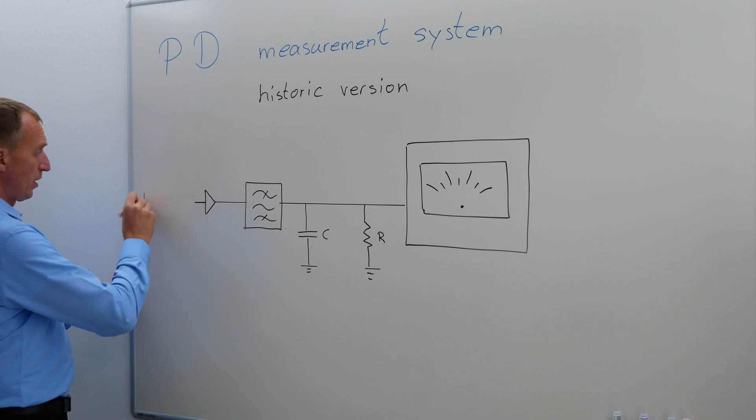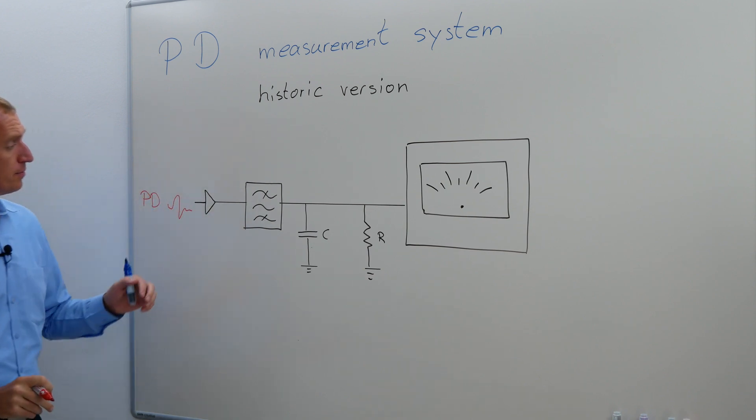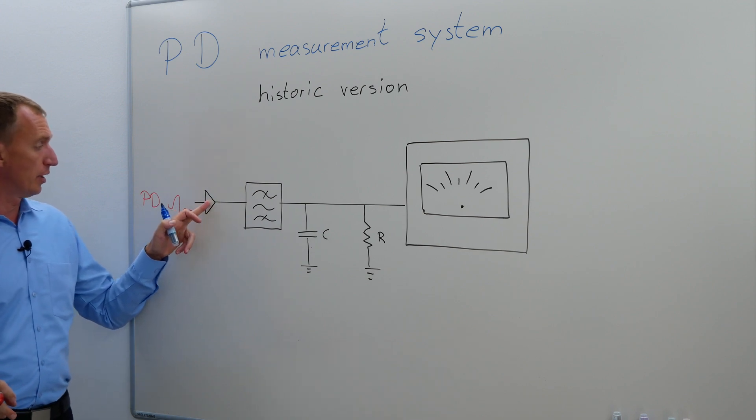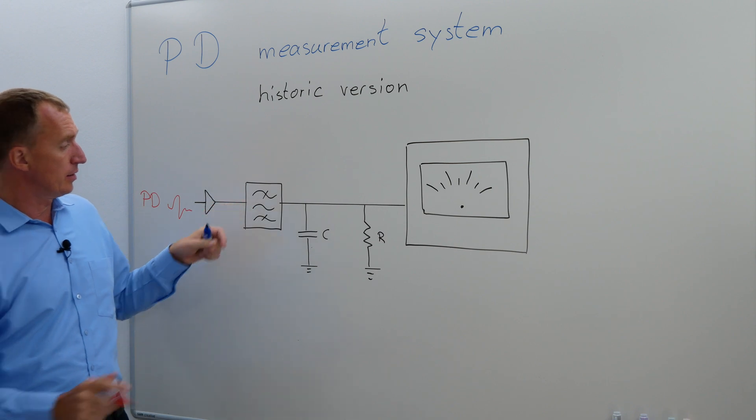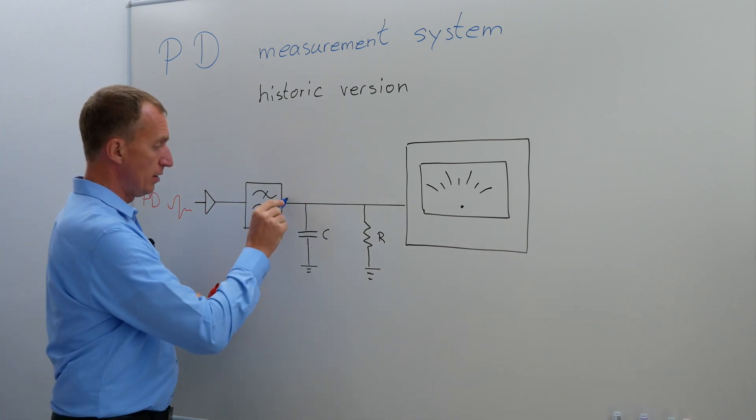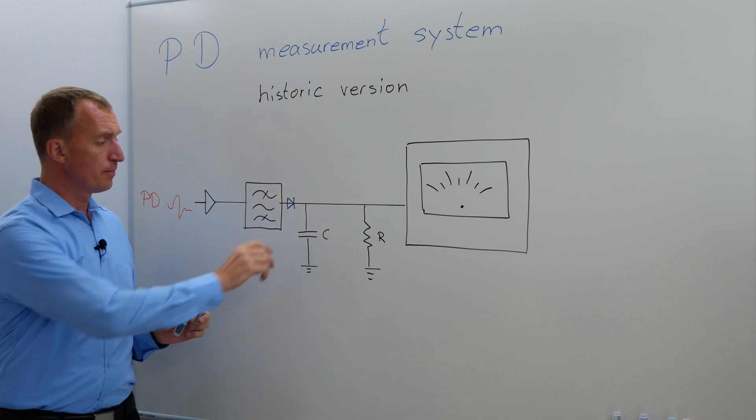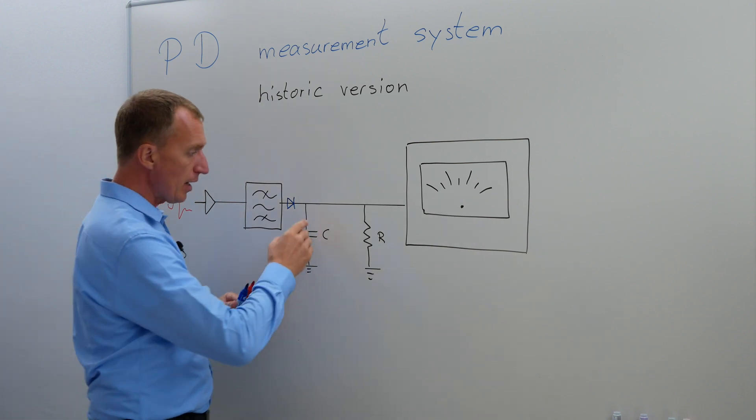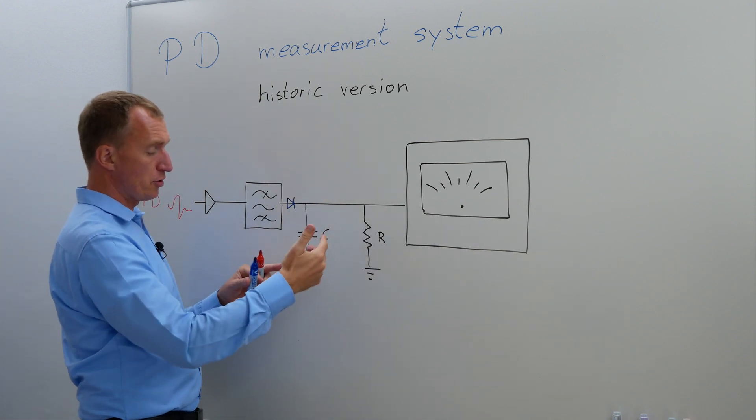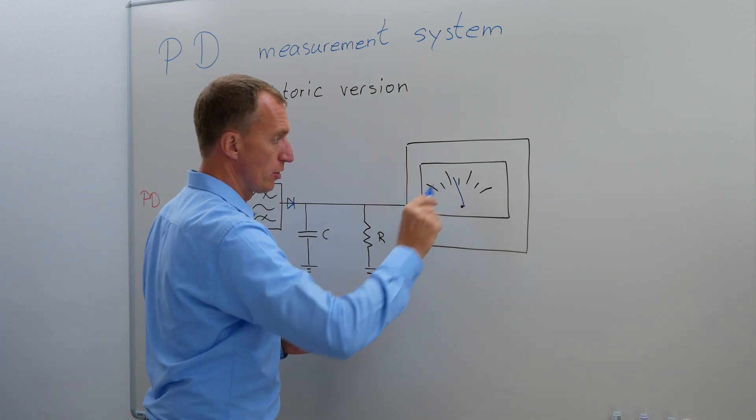So in the historic version we had a partial discharge in our pulse, it went into an amplifier, we had an analog filter set and we had a diode here, it was rectifying the signal and then with the signal we would charge a capacitor and depending on the charge of the capacitor, depending on the voltage over here, we will get a certain reading.